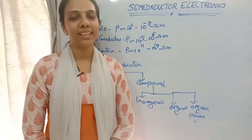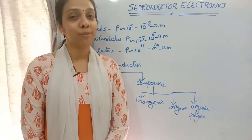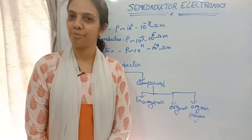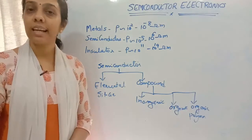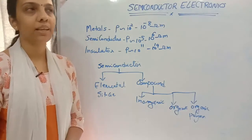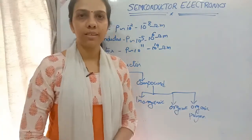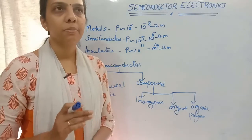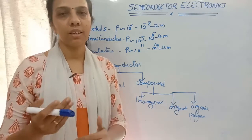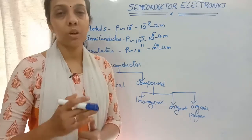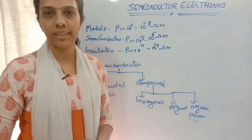Hello, my dear students, welcome back to Learn Physics. Before starting the session, I'm wishing all my dear students a very happy new year. Today we are starting the next chapter, that is semiconductor electronics. In this chapter, Zener diode is the omitted portion, and photodiode and LED are included in the syllabus. I'll tell you in detail as I take the portions.